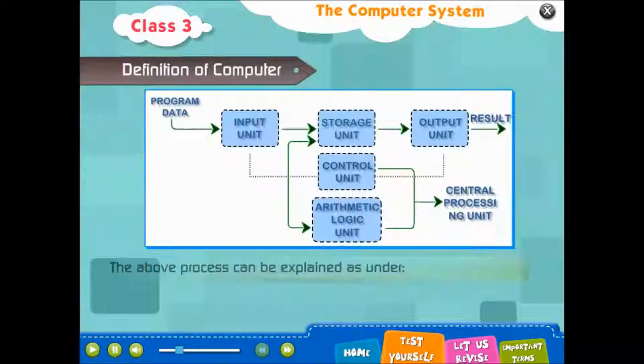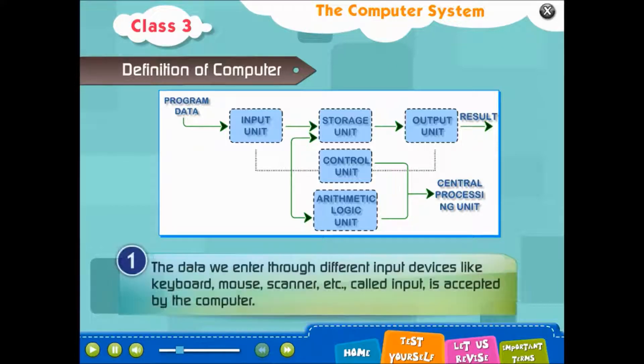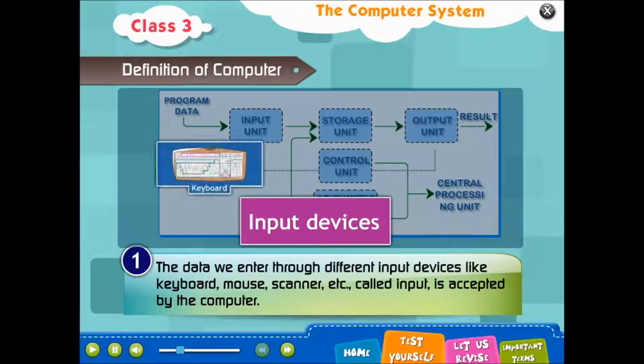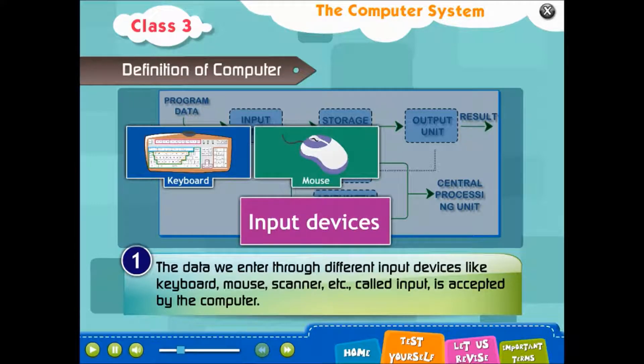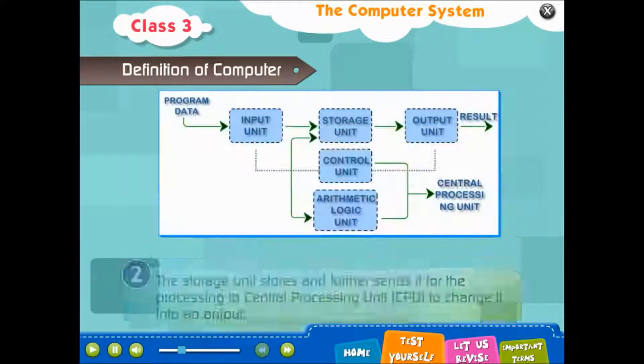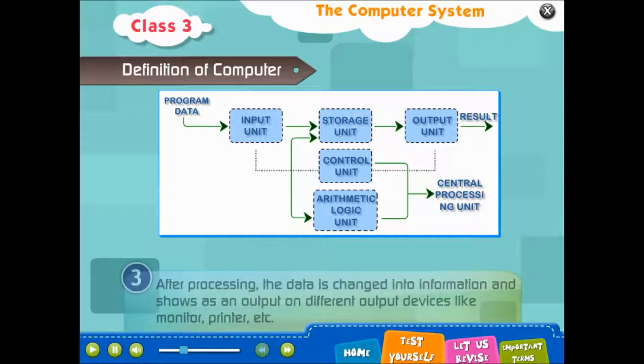The above process can be explained as under. 1. The data we enter through different input devices like keyboard, mouse, scanner etc. called input is accepted by the computer. 2. The storage unit stores and further sends it for the processing to central processing unit, CPU, to change it into an output.